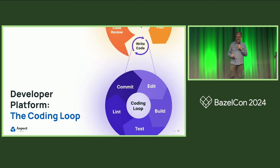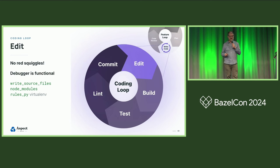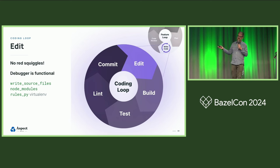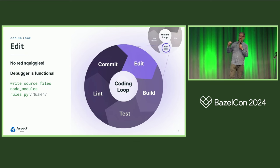Finally, let's zoom in on the coding loop. The first step is to edit the code. I can already promise you that our users don't have red squiggles in their editors and their debugger is functional. The reason is that we take the philosophy that files should simply go in the place that the editor and other tools expect. There are a few approaches for this: write source files is a way to take outputs of, say, protocol buffer generation and put them in the source tree so tools just work. Node modules tree is laid out in the source folder if you're using NPM. If you're using Python, our rules create a virtual env and the editor immediately picks that up.